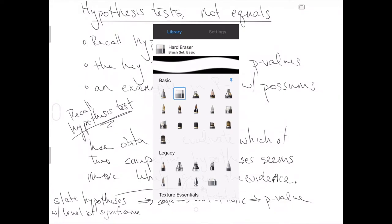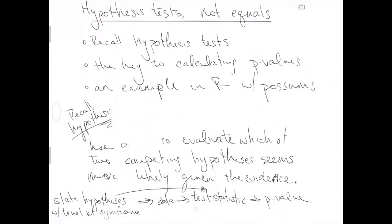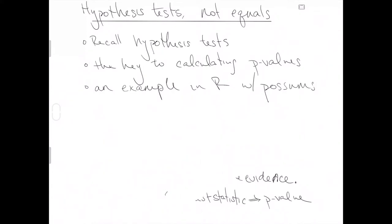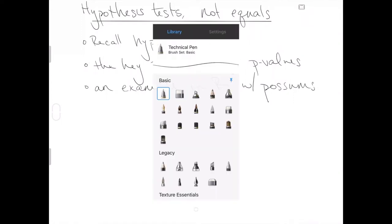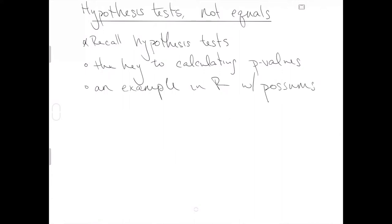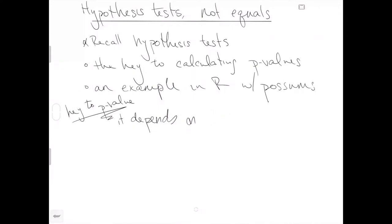That was our quick recap of hypothesis testing. Now let's jump into the key to calculating p-values — in this video specific to the case of not equals to, but in general the key to p-values is that it depends on the alternative hypothesis. On H1, the options for the alternative hypothesis consist of less than, greater than, or in this video, not equals to.